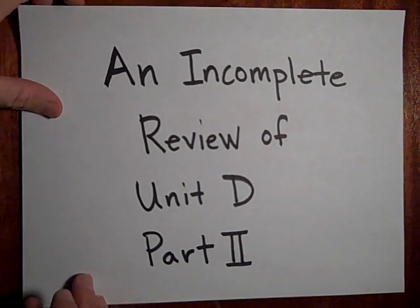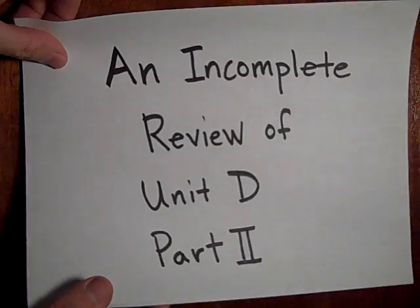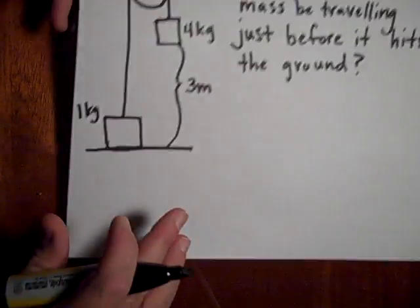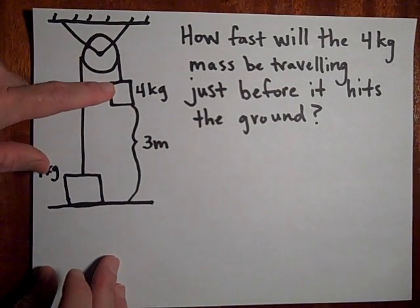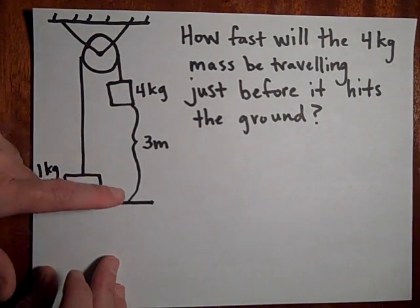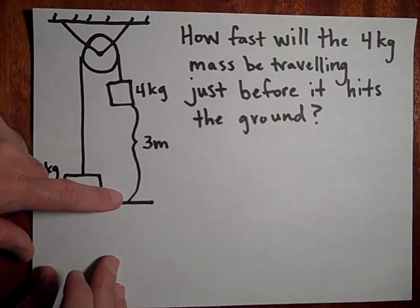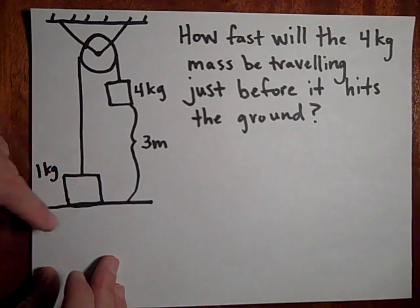Okay here is an incomplete review of unit D parts 2, so another E equals E prime problem. Here we have a mass, it's an Atwood's machine that's going to fall and hit the ground, and we want to know how fast is it going to be going when it hits the ground.